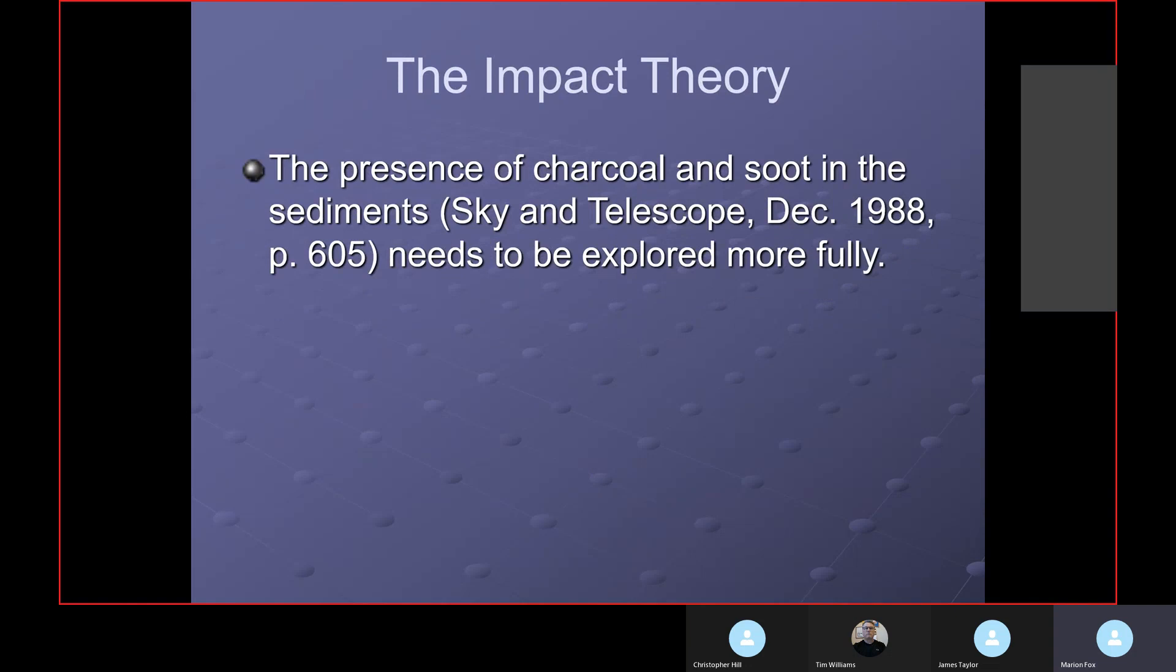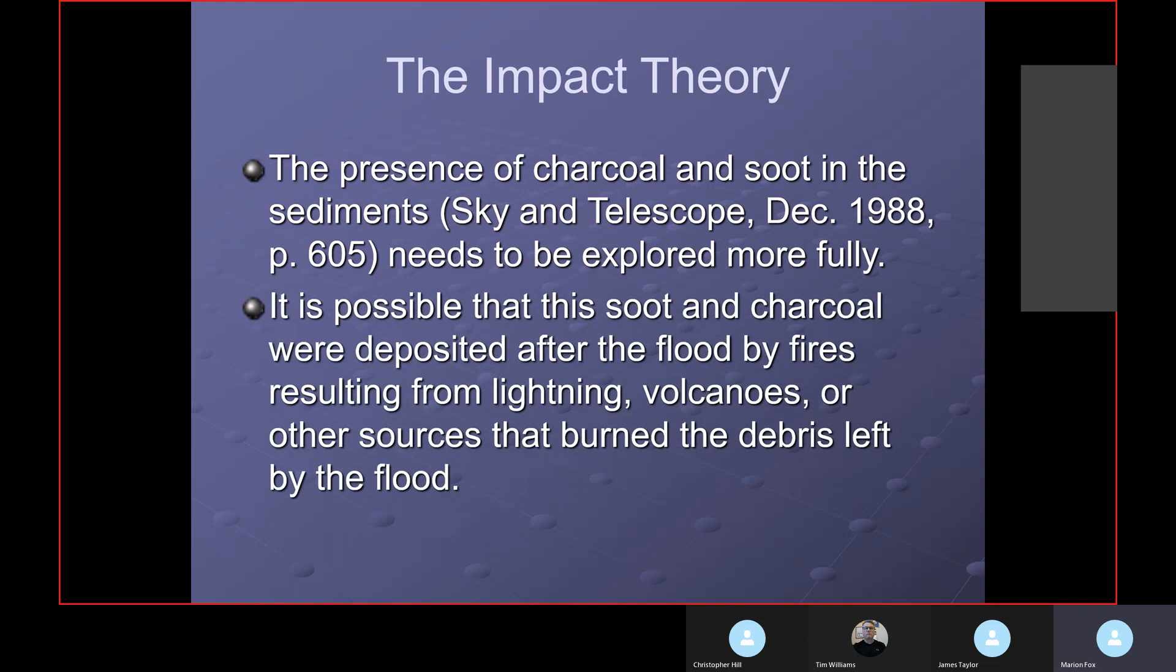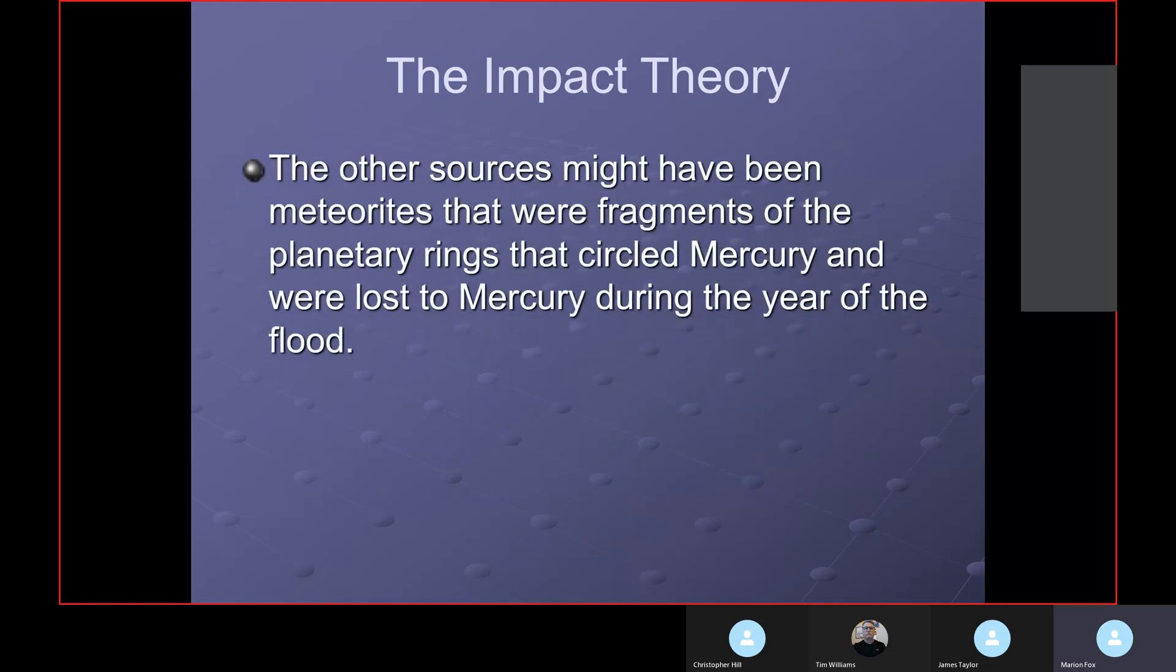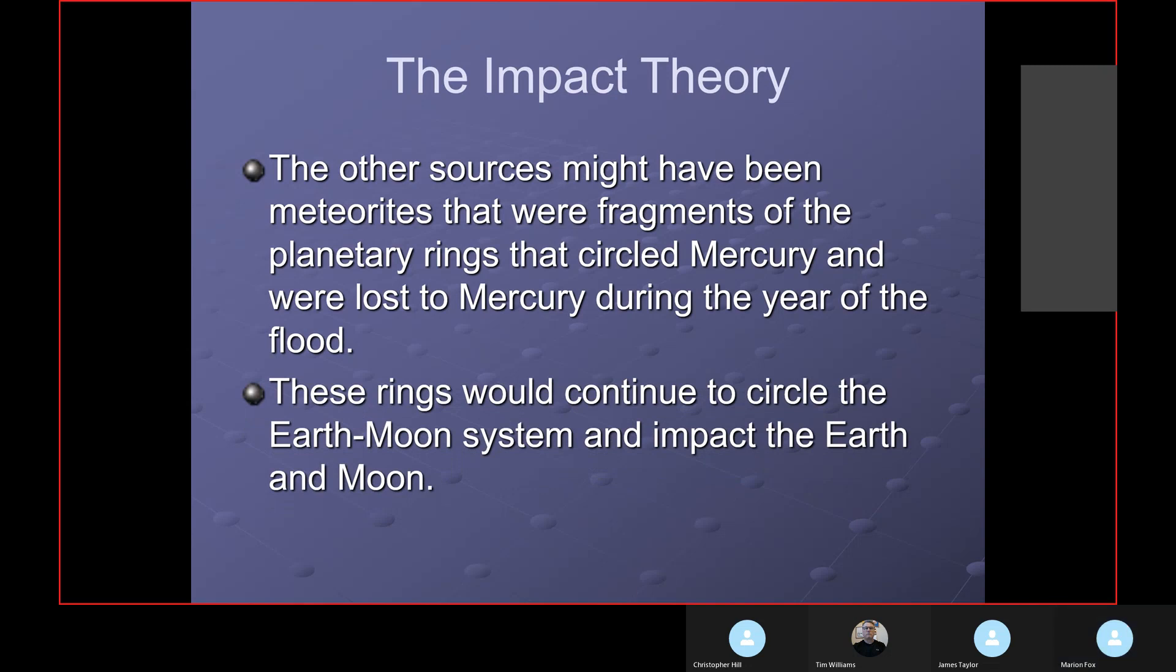Presence of charcoal. Sky and Telescope is not considered to be a scholarly journal, but it does have good material in it. They talk about it in December 1988, page 605 issue. Charcoal and soot in the sediments. Other sources find it as well. It's possible that this soot and charcoal was deposited after the flood by fires as a result of lightning, volcanoes or other sources that burn the debris left by the flood. The lightning could have set it on fire in various places. Volcanoes could have. Meteorites coming in are very very hot. They could have set it off too. The other source might have been meteorites that were fragments of the planetary rings that started with Mercury and were lost to Mercury during the year of the flood. These meteorites keep coming back to the Earth even today. They continue to circle the Earth-Moon system and impact the Earth-Moon.